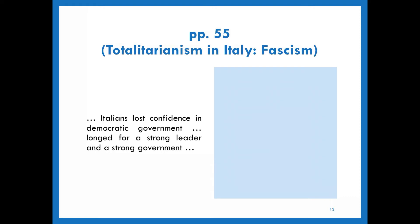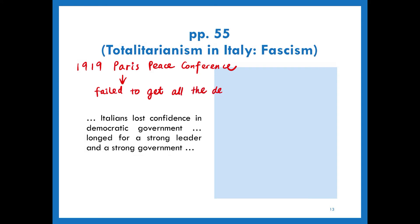Due to the time limit, we are going to focus on Italy only. The reason for us to talk about Italy first is related to its timing, because Italy was the first country to come under the rule of totalitarianism. As early as 1919, there was the Paris Peace Conference, and Italy failed to get all of its demands. That's why the people lost confidence in their democratic government — they believed their current government was useless and wanted a strong leader.